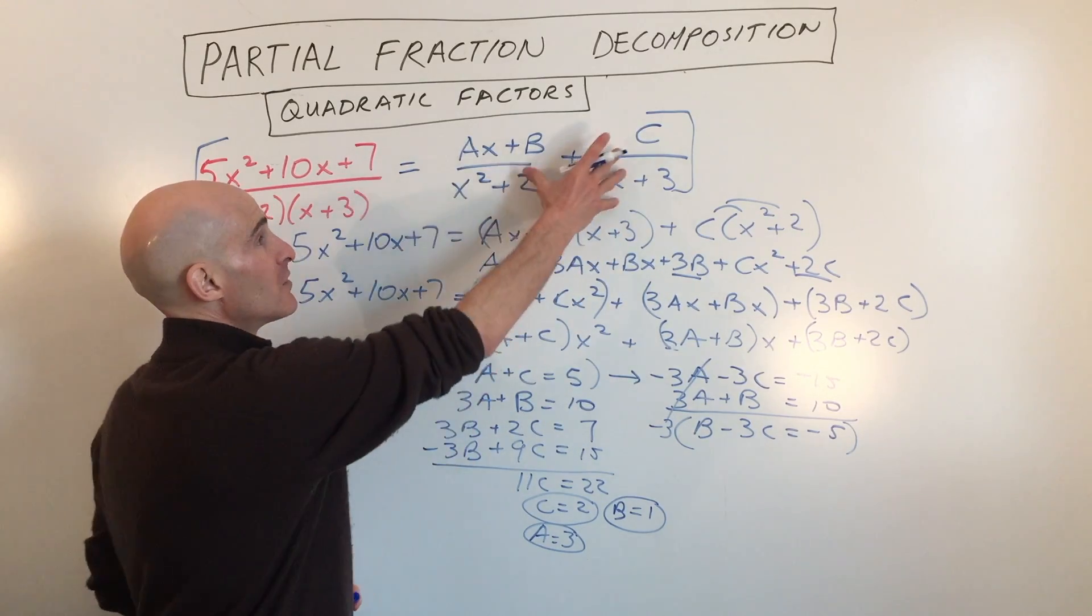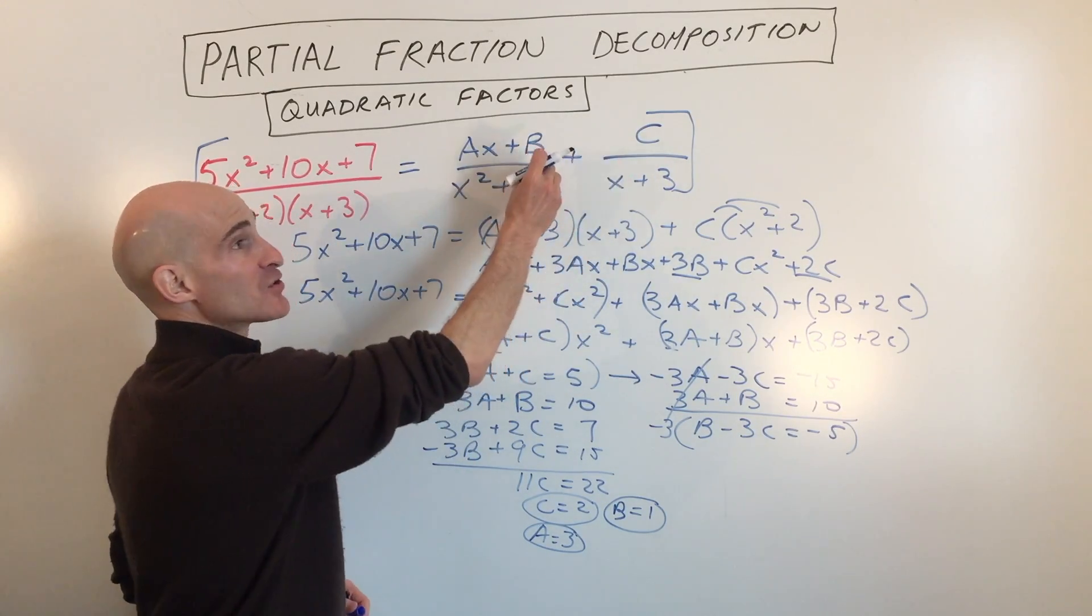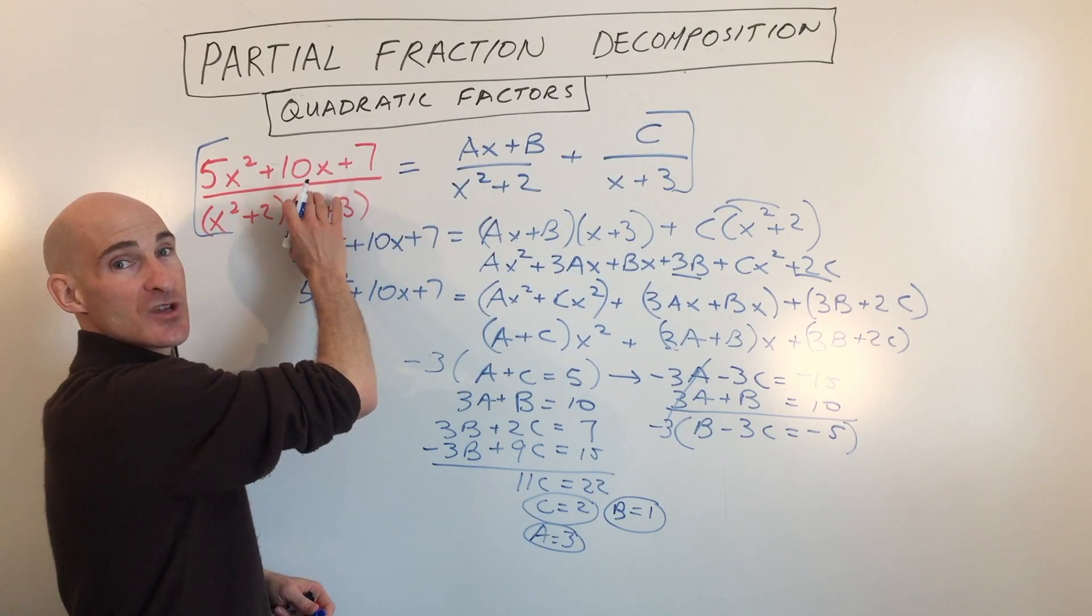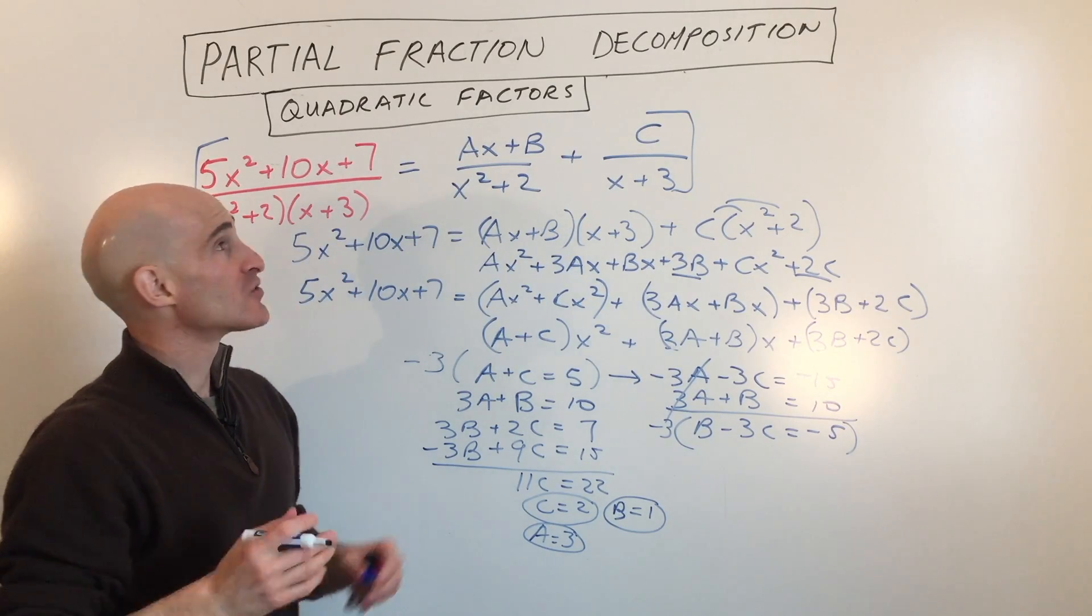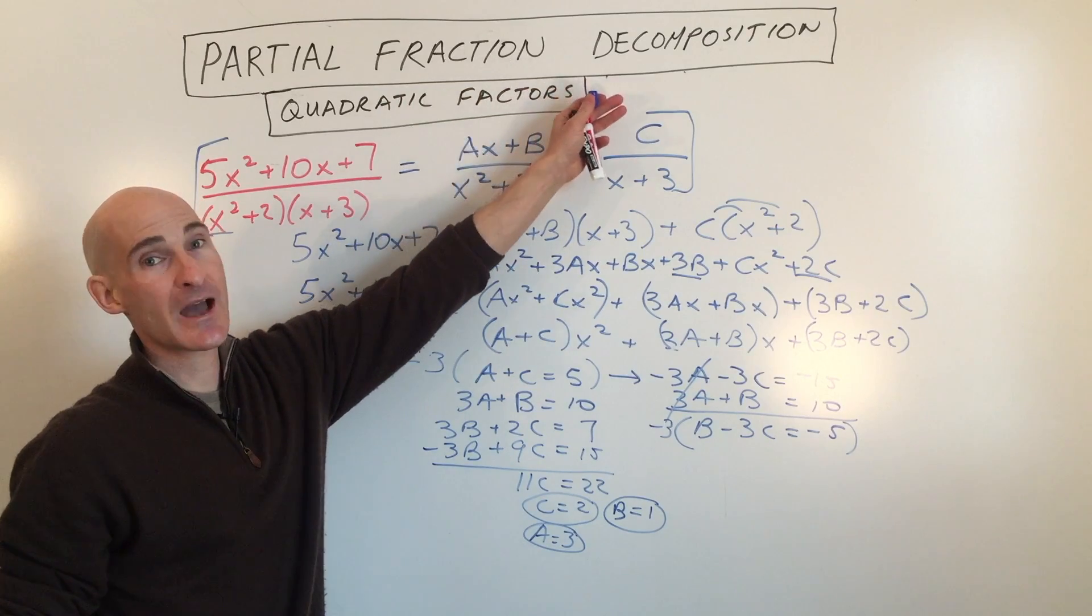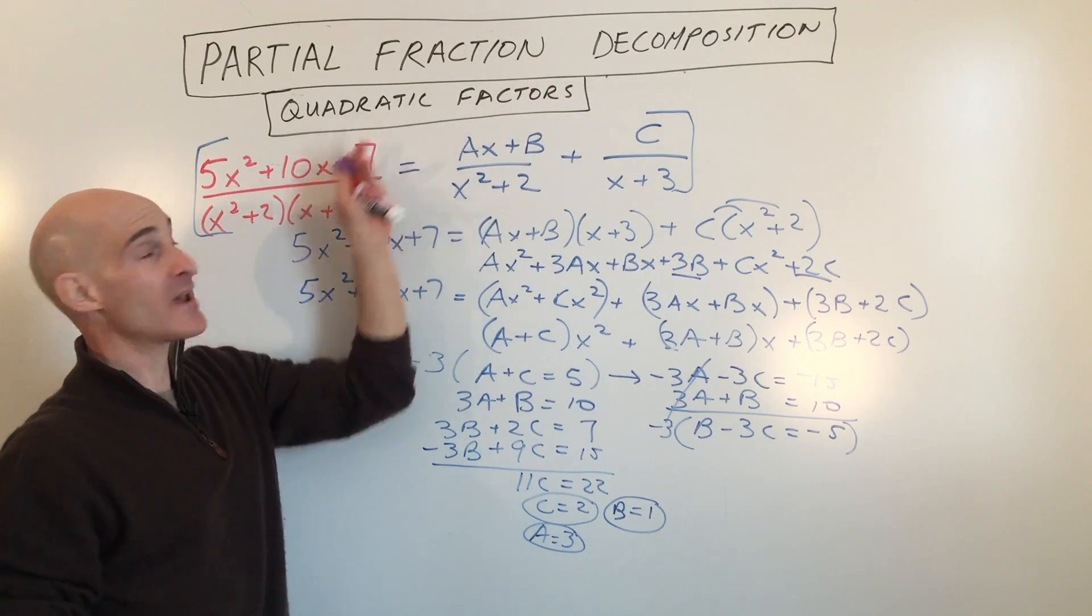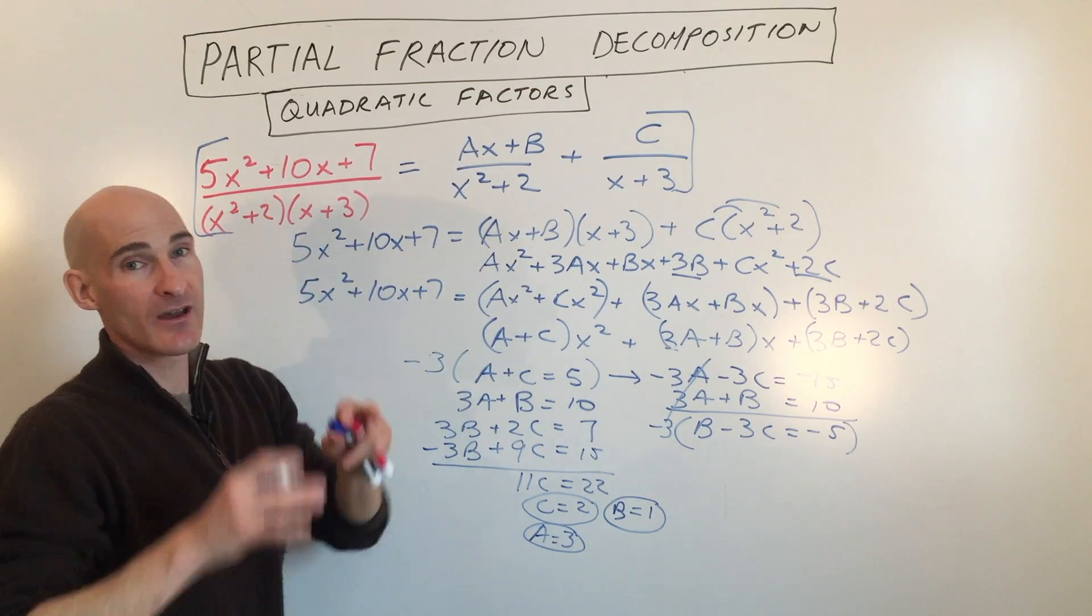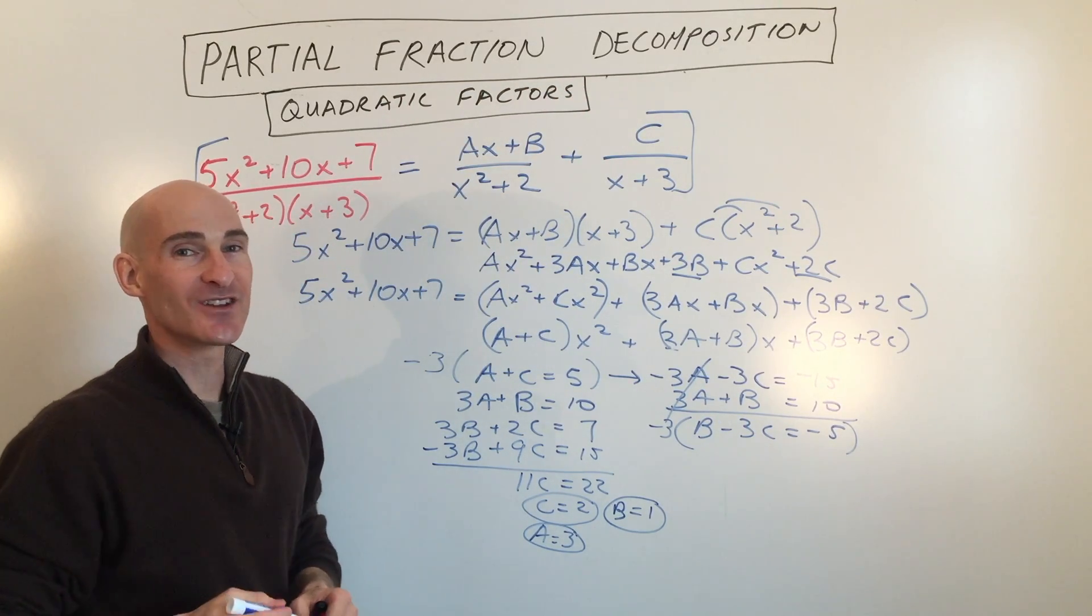You can check your work. If you get a common denominator and combine these into one fraction, you can verify that you get back this original fraction. So this has been how to do partial fraction decomposition when you have a quadratic, meaning a second degree, factor. I'll see you in the next video.